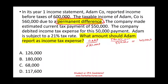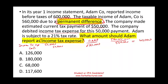You could have less revenue that's not taxable, like municipal bonds, or more expenses that are permanent in nature. The company made estimated current income tax payments of $50,000 — they debited income tax expense $50,000 and credited cash $50,000. Adam is subject to a 21% tax rate. The question asks: what amount should Adam report as income tax expense?